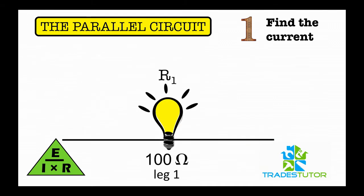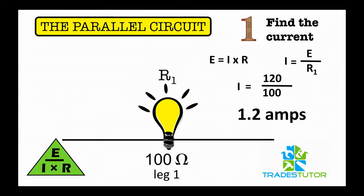So if we take leg one, or through resistor number one, which is 100 ohms, we use our Ohm's law: E equals I times R, volts equals amps times resistance. Switch it around to find the amps, throw the numbers in, and what we get is 1.2 amps.